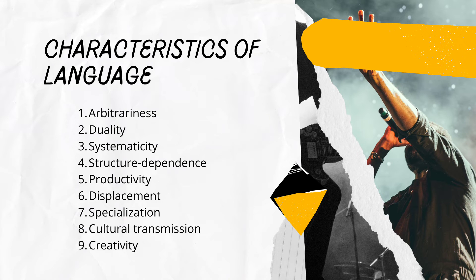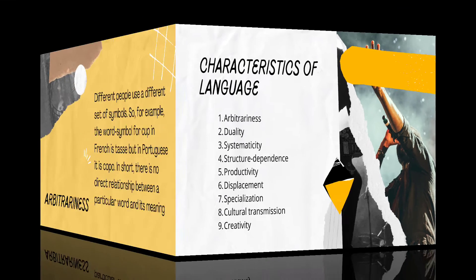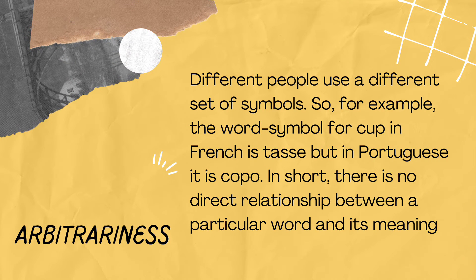What are the characteristics of language? Arbitrariness: different people use a different set of symbols. For example, the word symbol for cup in French is 'tas', but in Portuguese it's 'copo.' In short, there is no direct relationship between a particular word and its meaning.